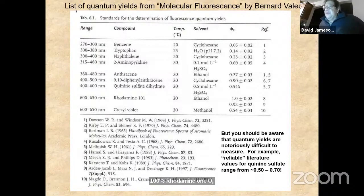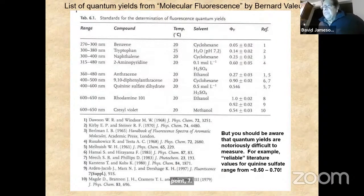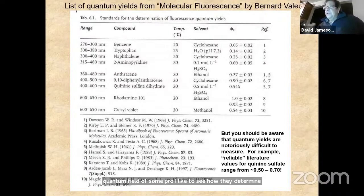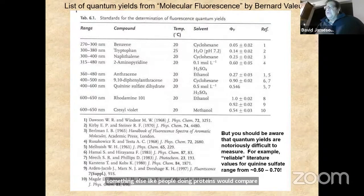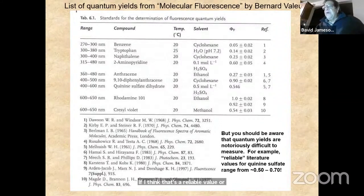Quantum yields are notoriously difficult to measure. For example, reliable literature values for quinine sulfate range from about 0.5 to 0.7. When I read a manuscript discussing the quantum yield of some probe, I like to see how they determined it. Usually they compare it to a reference compound, like a tryptophan derivative, and report the quantum yield they used for the reference. Despite what instrument manufacturers tell you, it's not a trivial matter to measure a quantum yield.